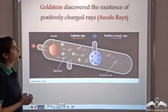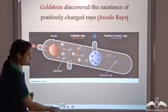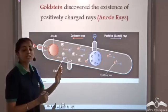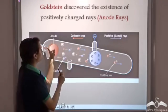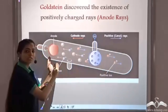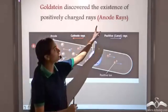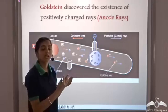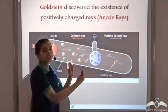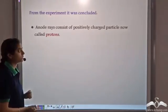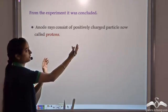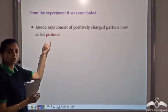Some years later, a scientist named Goldstein performed the same experiment. He observed that when cathode rays move from the negative to the positive terminal, at the same time a beam also moves from the positive towards the negative terminal. He called this beam anode rays. Since the beam moves towards the negative terminal, it should be positively charged. So anode rays consist of positively charged particles, which are now called protons.